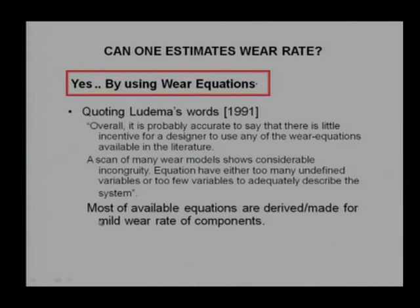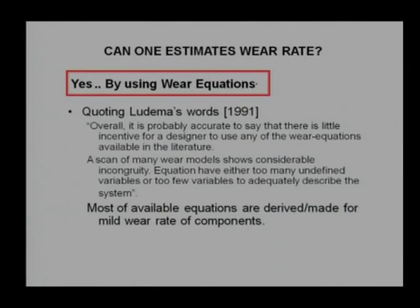Using wear equations directly may not give complete solutions — we need to think from another angle. Most available equations are derived for mild wear rate of components. In the mild wear domain, wear rate can be predicted, but in severe wear cases it cannot. If we are rejecting a component, it is because of severe wear, and severe wear may come with a number of combinations of wear mechanisms, making root cause failure analysis always difficult with a single equation.